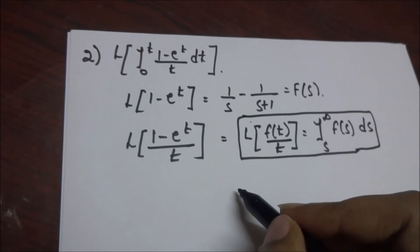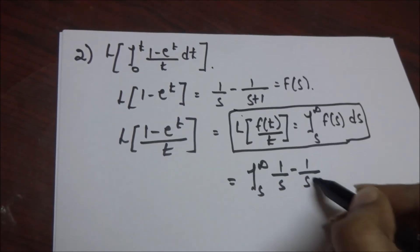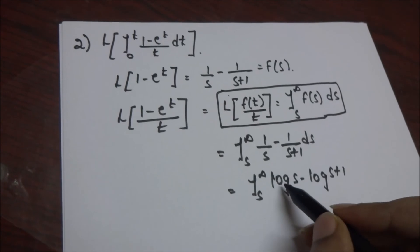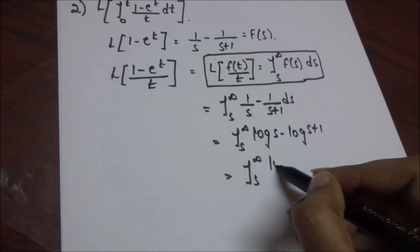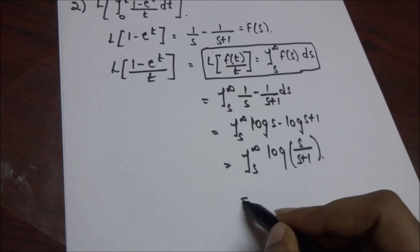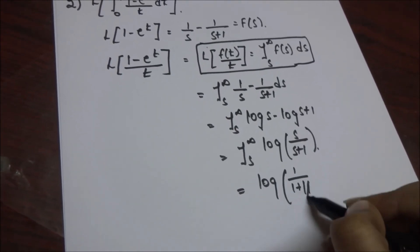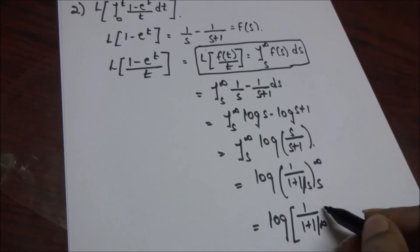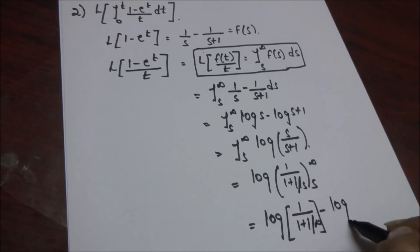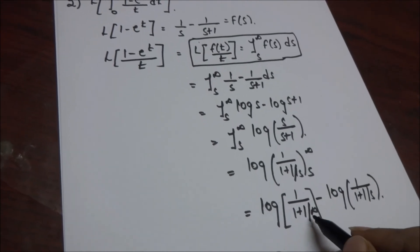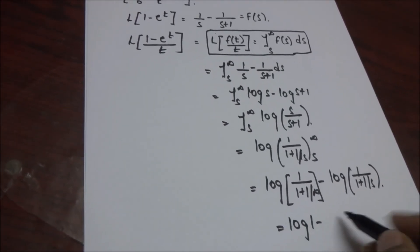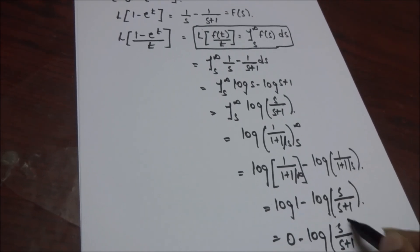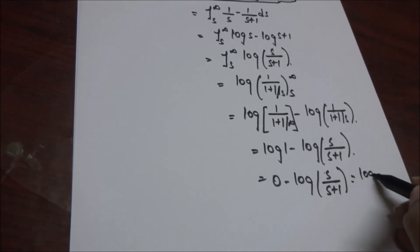Applying the division-by-t formula, we get the integral from s to infinity of [1/s - 1/(s+1)] ds. Integrating gives [log s - log(s+1)] from s to infinity, which is in the form log a - log b, so it becomes log(s/(s+1)) evaluated from s to infinity. Applying the limits: log(1/(1 + 1/∞)) minus log(s/(s+1)) equals 0 minus log(s/(s+1)), which equals log((s+1)/s).